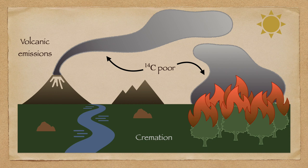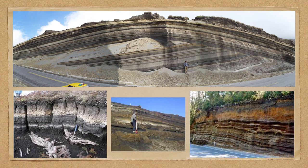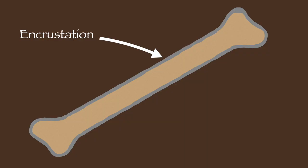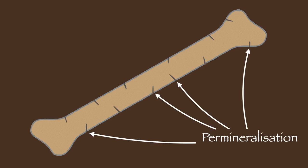Consider two well-known contamination sources: volcanic emissions and local burning of vegetation. Both release an abundance of old carbon, making samples seem older than they are. Fortunately, these events leave physical evidence in the form of ash layers in the sedimentary record, so we can determine which locations and epochs are affected and increase the associated age uncertainties appropriately. A sample may also accumulate young carbon on its exterior surface deposited by local geological processes — encrustations removable through chemical and mechanical cleaning. Sample contamination may also occur if young carbon penetrates the interior through cracks, a process called permineralization, which can be remedied by thorough sample preparation.